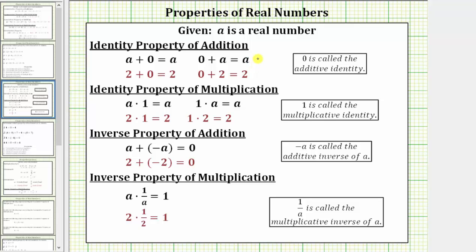And then finally, we have the inverse property of addition, which is given as a plus negative a equals zero. When adding opposites, the sum is always zero, and this is the inverse property of addition. We can say that negative a, or the opposite of a, is called the additive inverse of a.